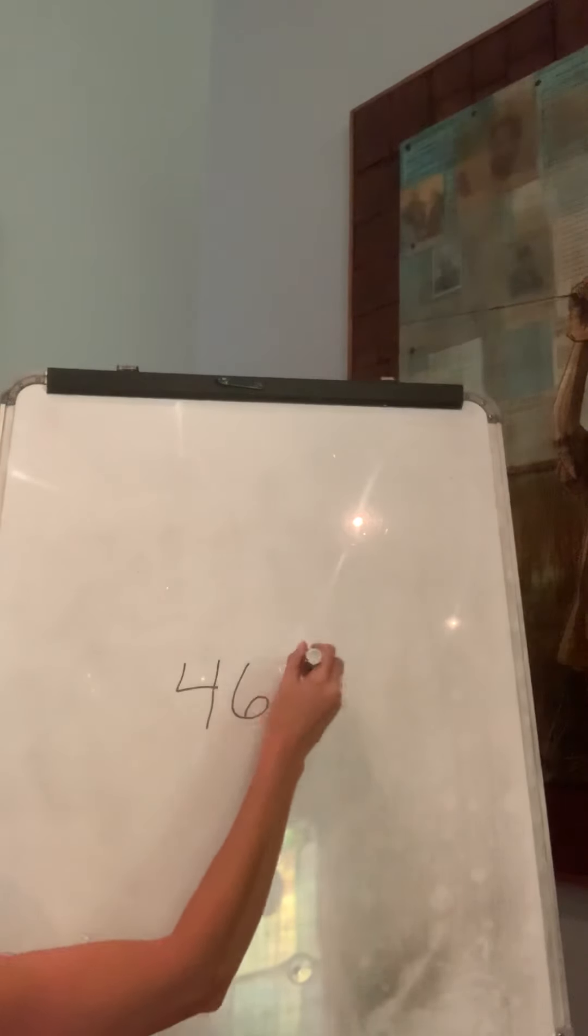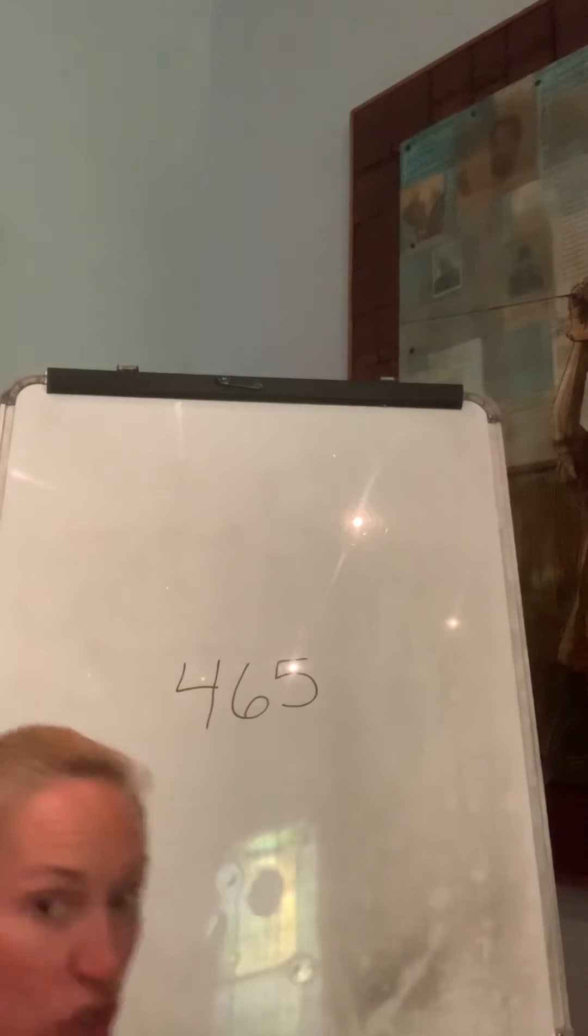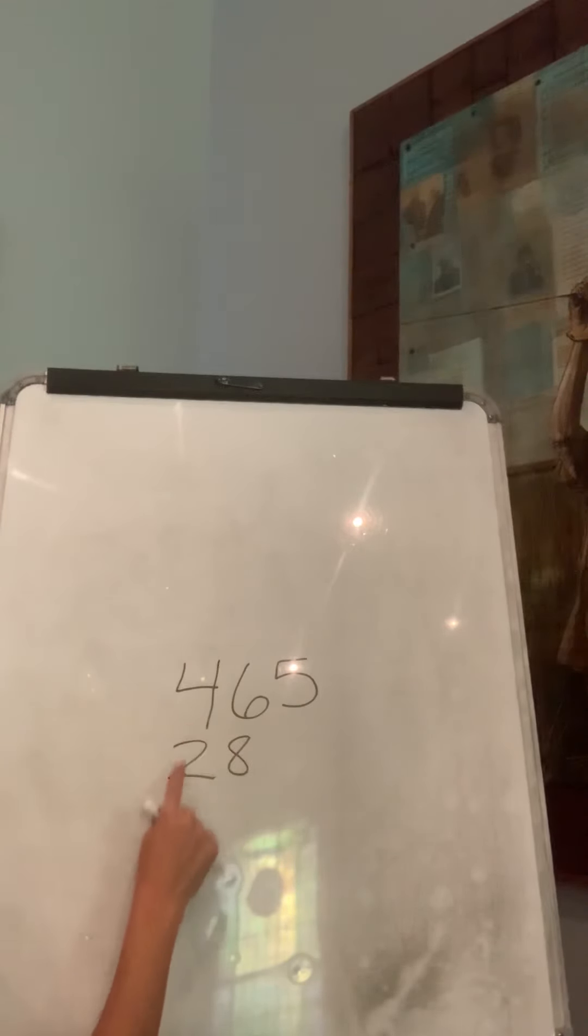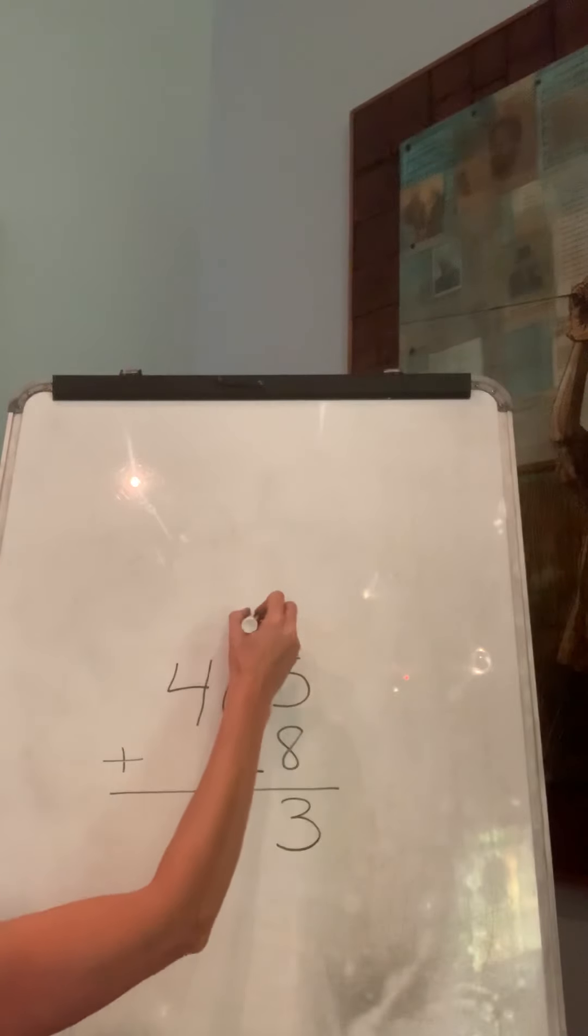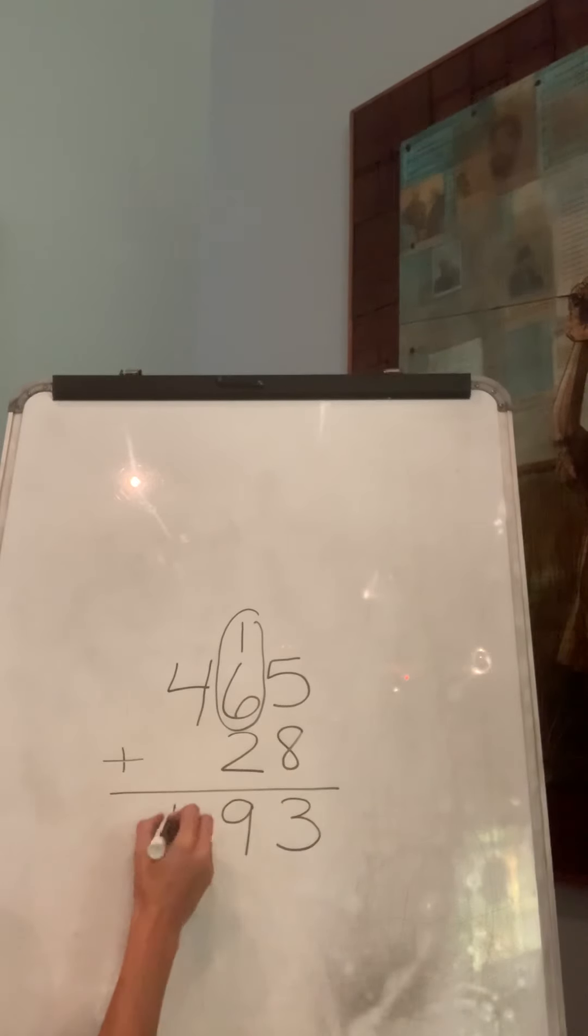The first one says Mrs. Cocalis has 465 pencils. Then it says Mrs. Cantrell has 28 pencils. Am I going to put it right here? No, because that's at the hundreds, that's 280 something. So I have to scoot it over and make sure it's 28 over here, the ones with the ones. And it says how many do they have all together? We're putting them together so it's adding. So 465 plus 28. I'm going to start with the ones and we're adding. So 5 plus 8 is 13. 6 plus 1 is 7, 8, 9. And then 4 plus 0 is 4. So we have 493 pencils altogether.